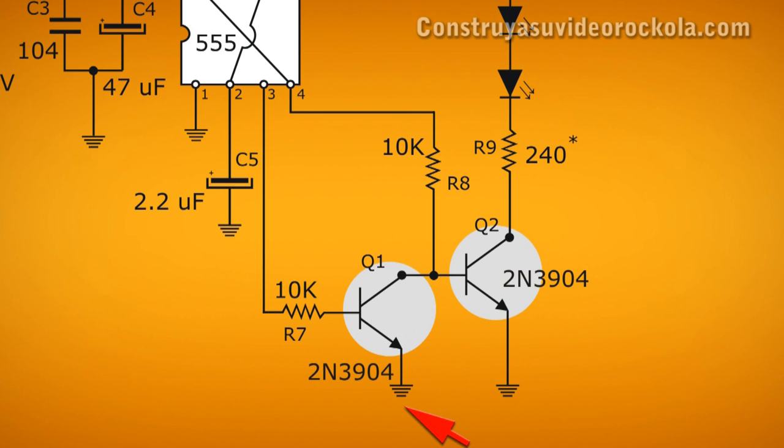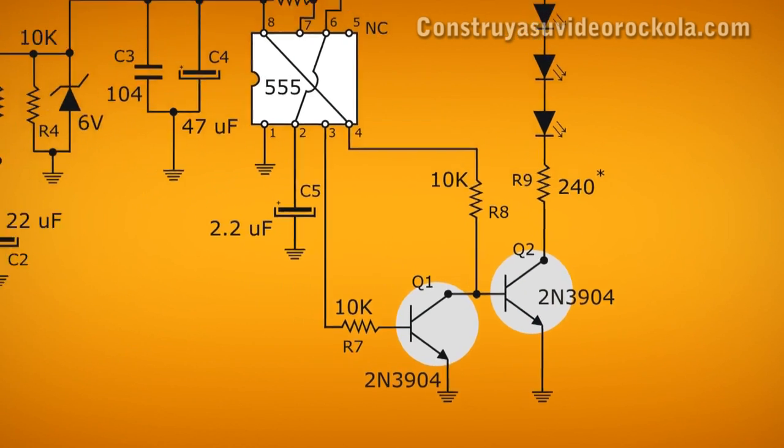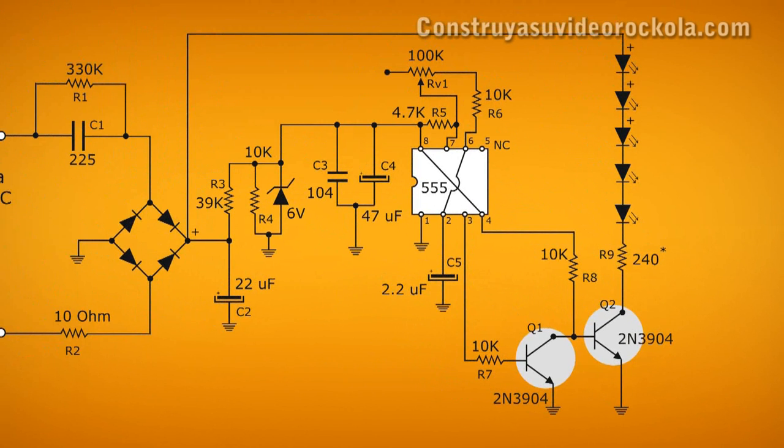The emitter of this goes to ground and the collector receives voltage via a 10K resistor and is connected to the base of another transistor. The collector of the other 2N3904 is in series with the LEDs that are powered from the positive of the diode bridge before the zener diode and limiting resistor.